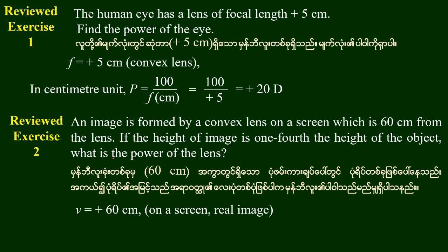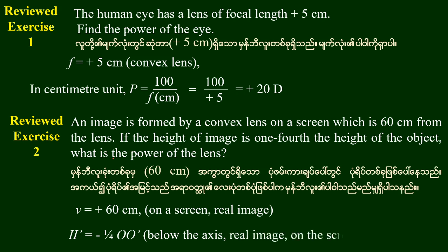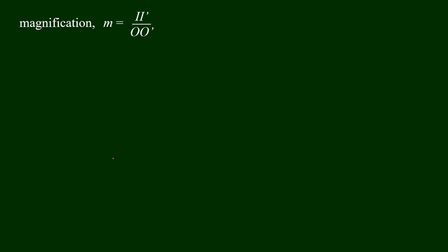The image distance b is positive, equal to 60 cm. The magnification is equal to the height of image divided by height of object, which equals minus 1 divided by 4. So magnification equals minus b divided by u, giving minus 1 divided by 4.